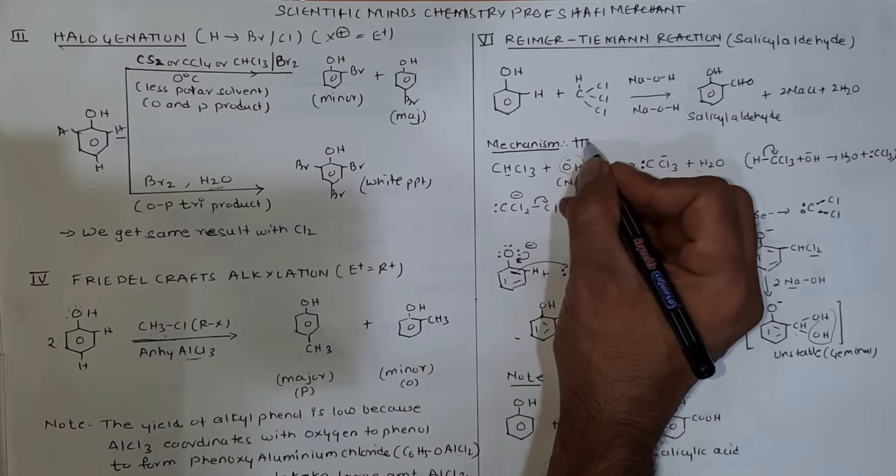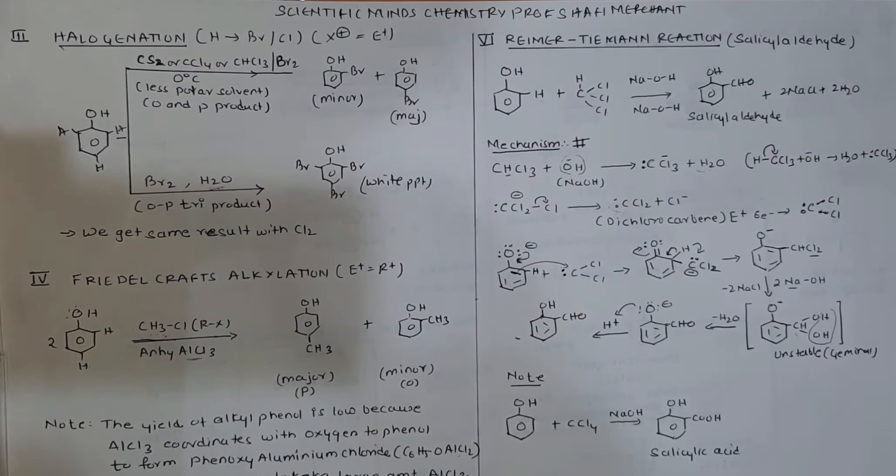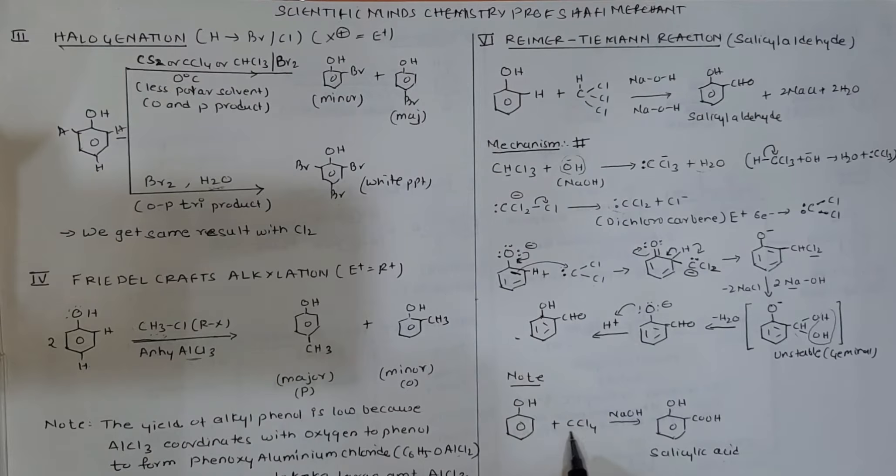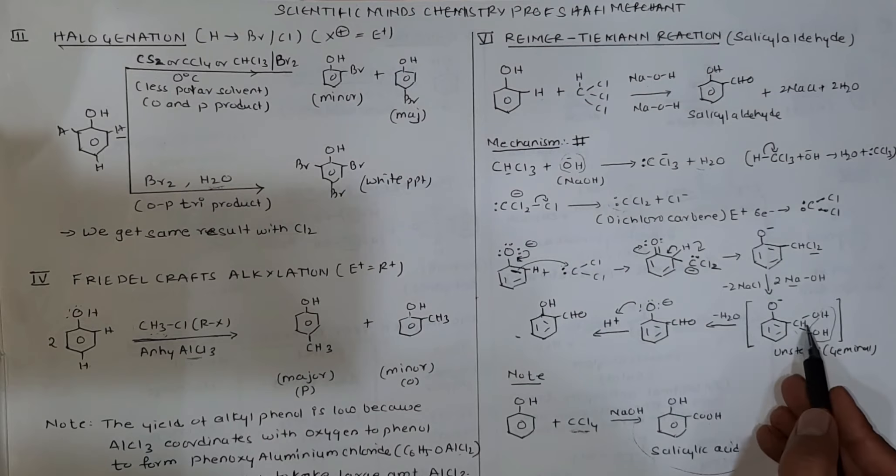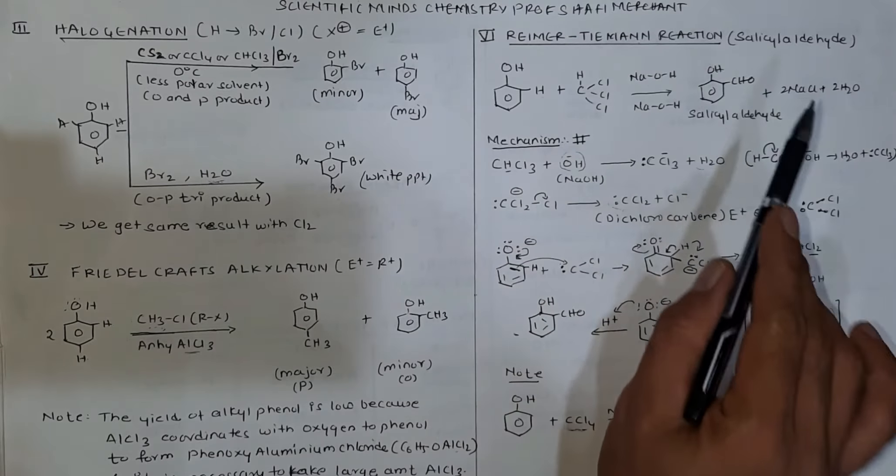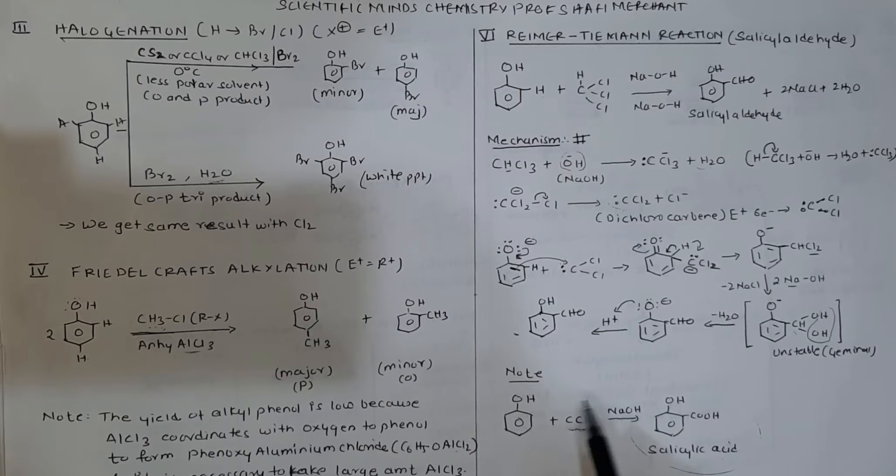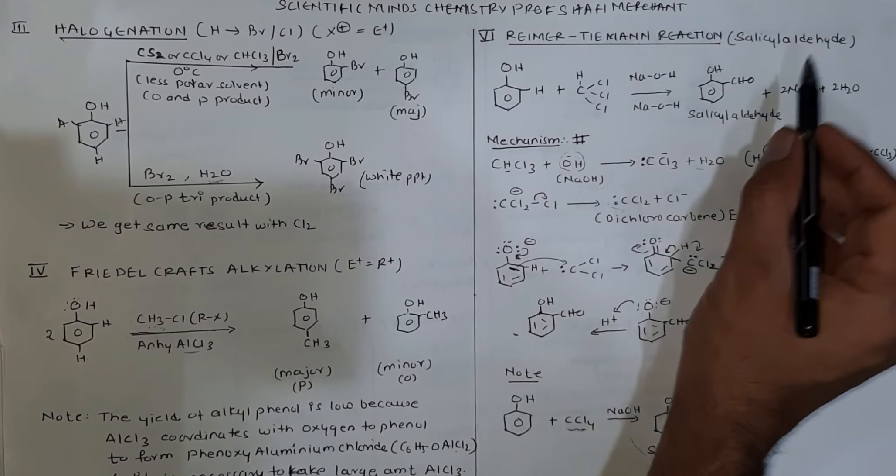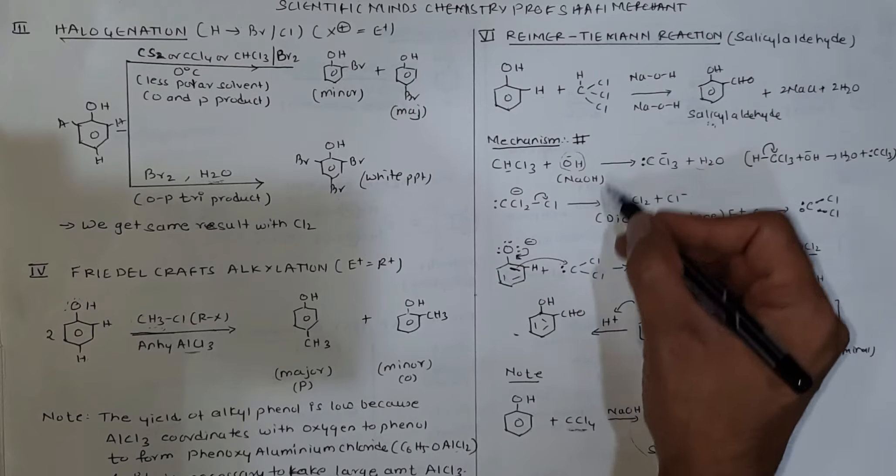This mechanism is not given in the textbook, but you can understand how the reaction works. If you have chloroform, use CCl3 to form salicylaldehyde. If you take CCl4, it forms salicylic acid instead of COH. If you take NaOH and chloroform, you get salicylaldehyde. With NaOH and CCl4, you get salicylic acid. Reimer-Tiemann reaction is mainly used for preparation of salicylaldehyde.